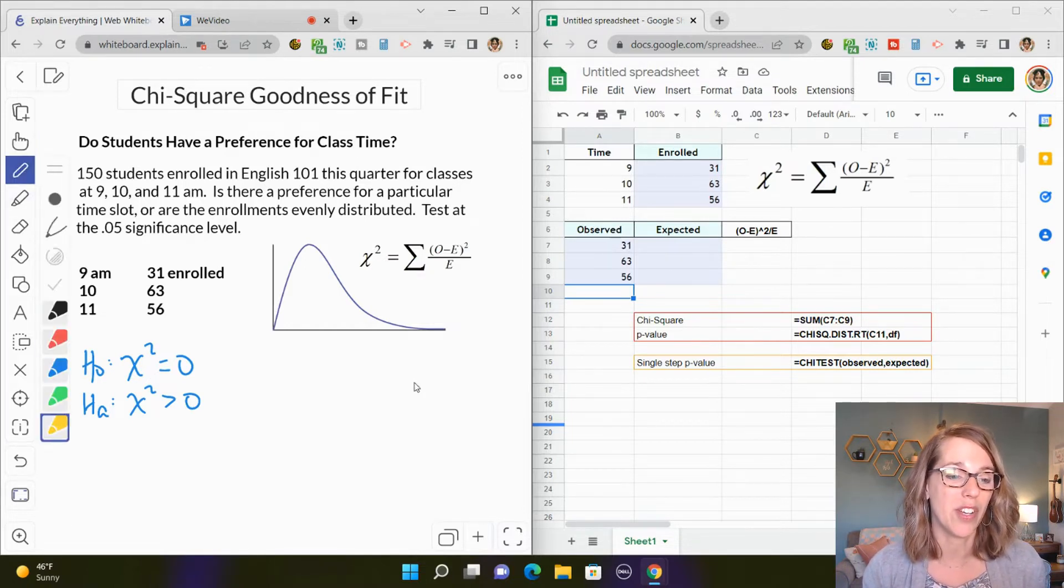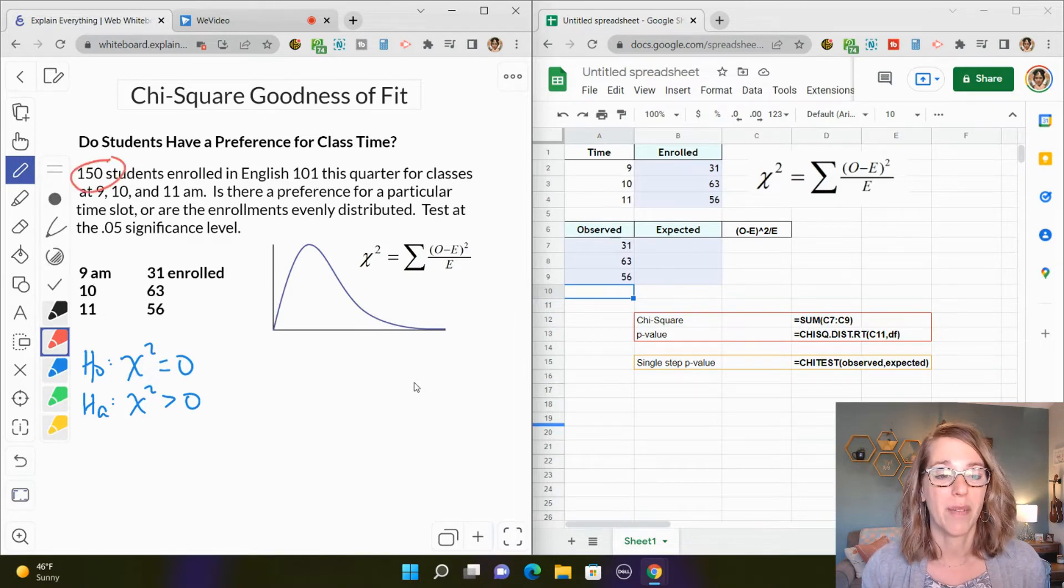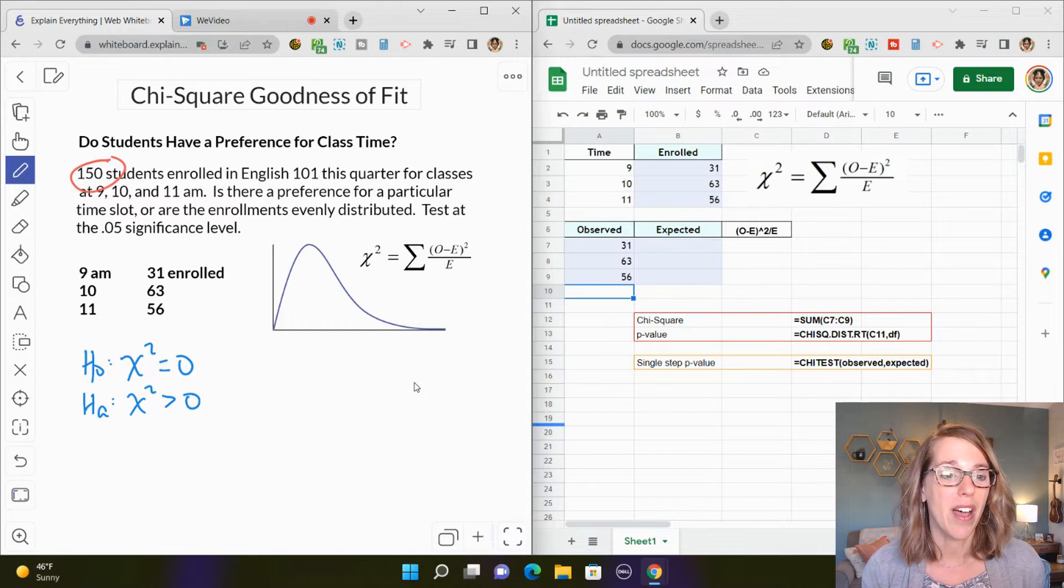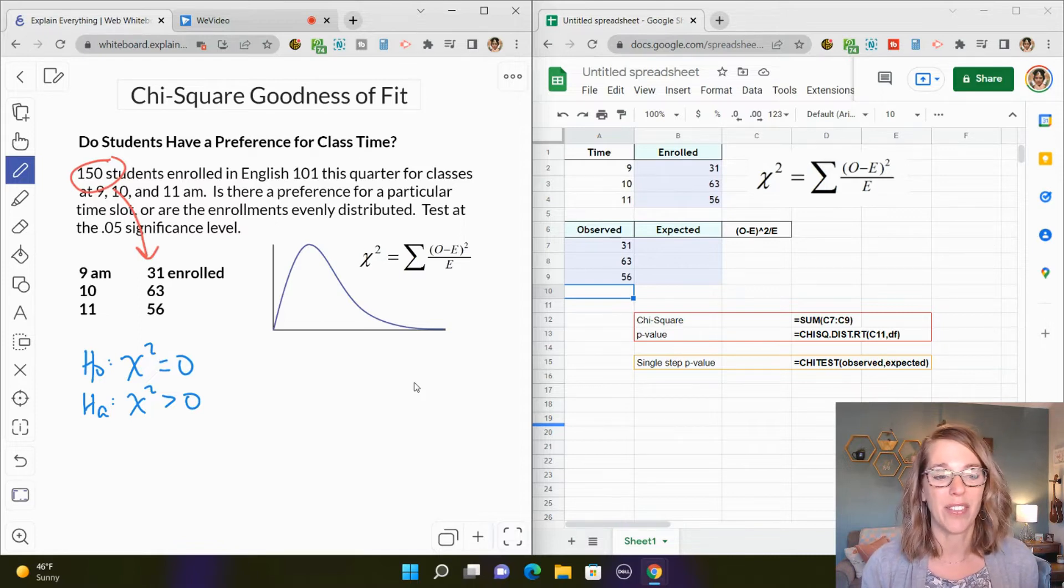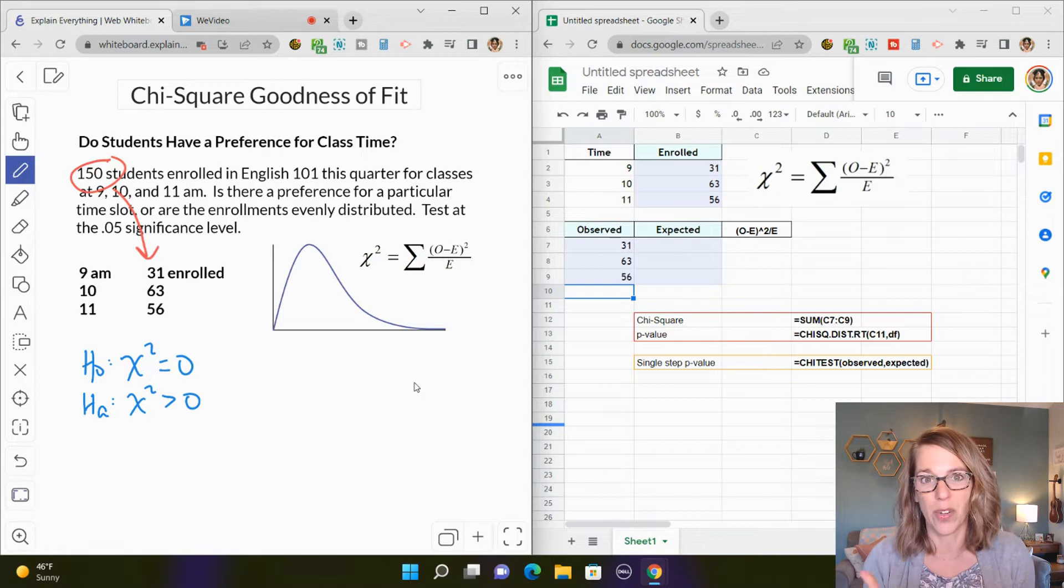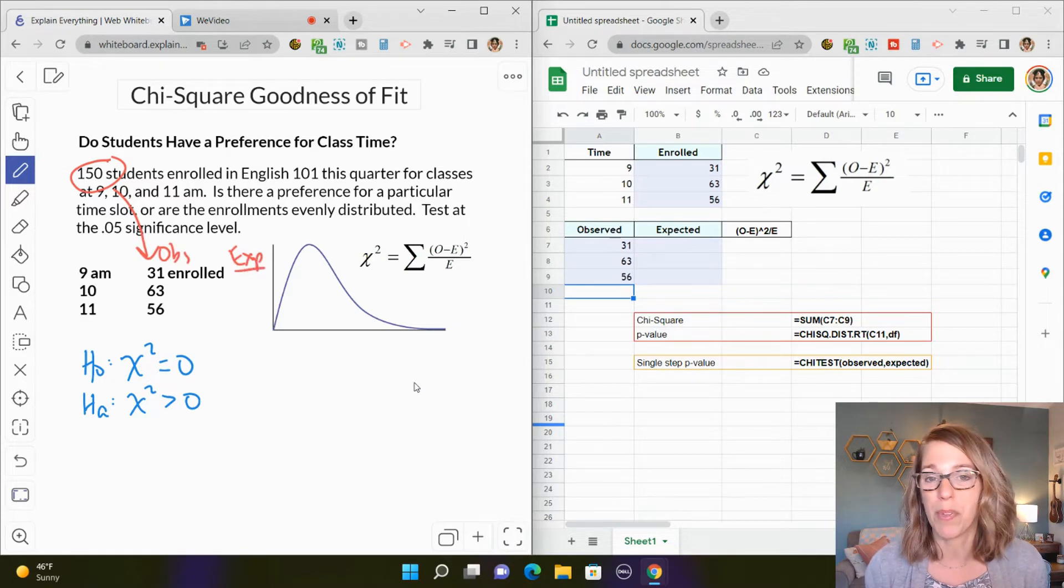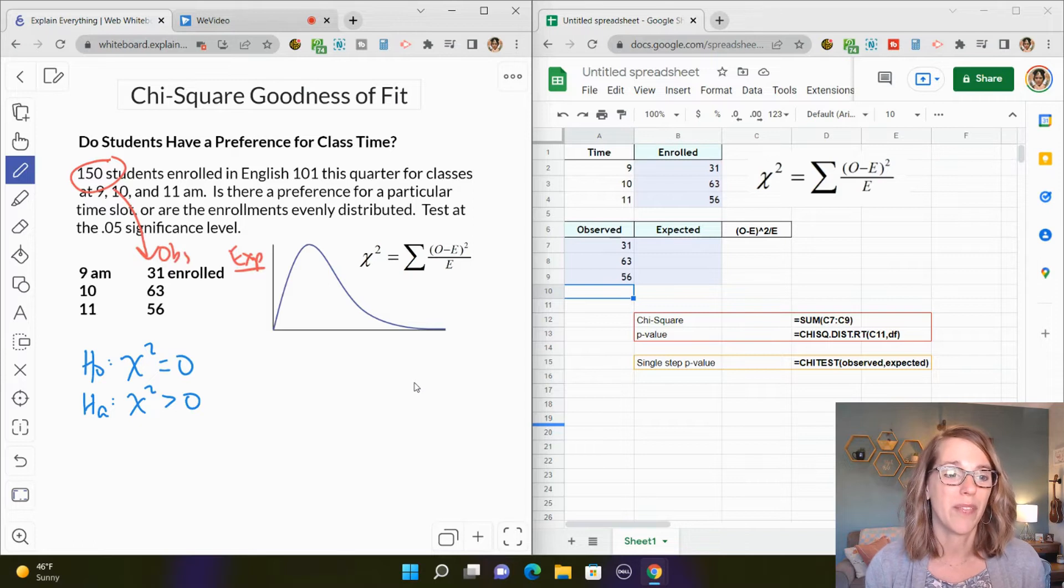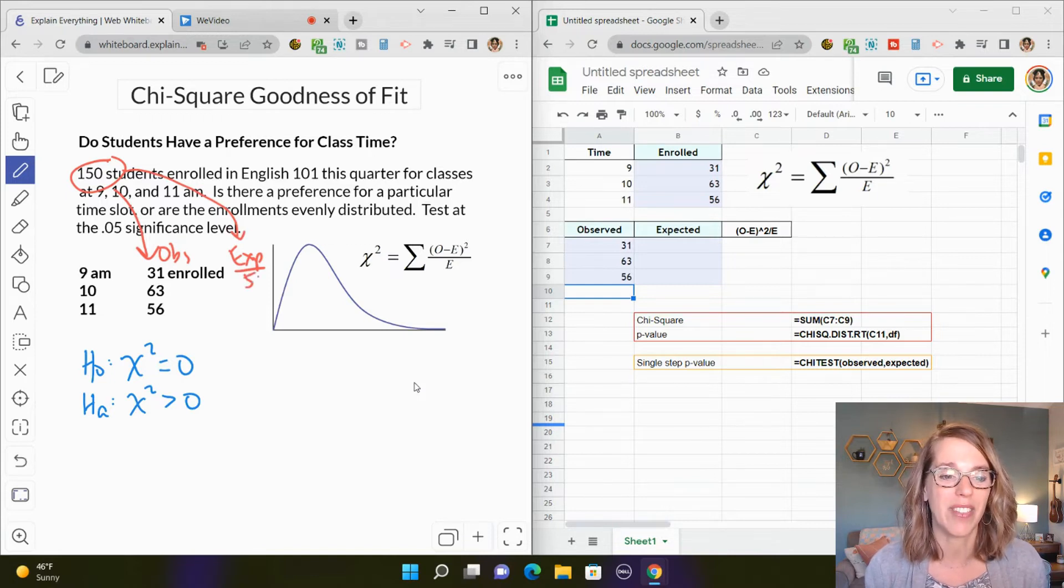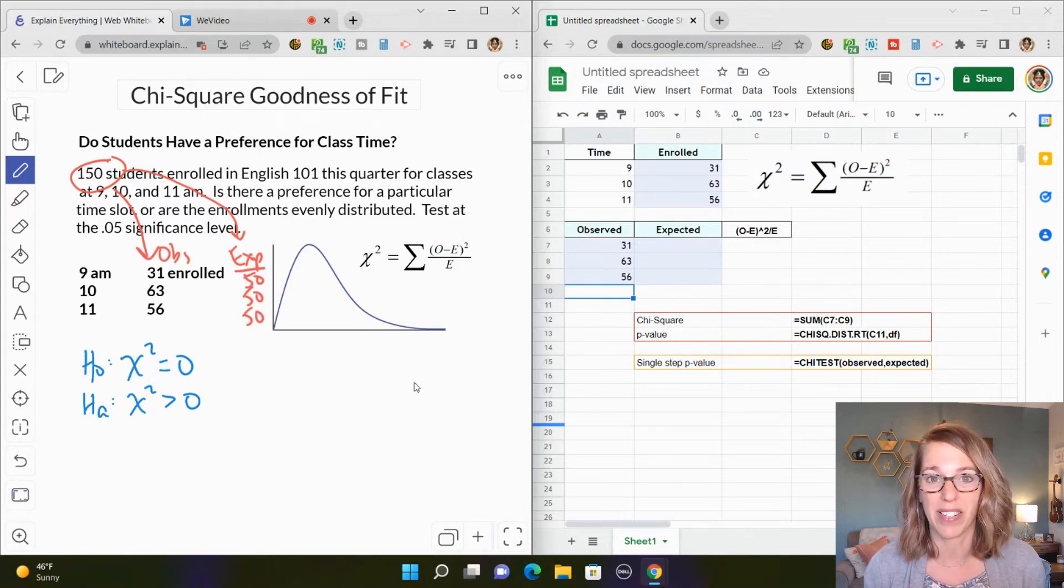In this example, we've got 150 students and we want to know if they are showing a preference for their class time. Of those 150, they've been distributed between the 9, 10, and 11 o'clock classes: 31, 63, and 56. Now we would expect a difference. The question is, is there a significant difference or a significant preference? We call these values our observed. Our expected values, if we're looking to see if there's a preference, would be if there was no preference between the three. If there is no preference between the three class times, I would expect 150 to be divided evenly between these three: 50, 50, and 50. So we've got our observed and our expected values.